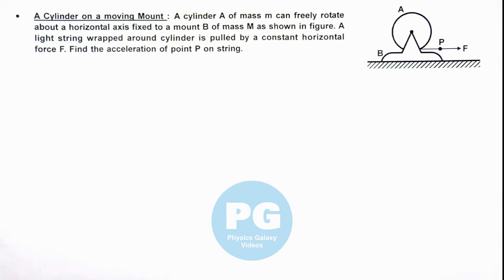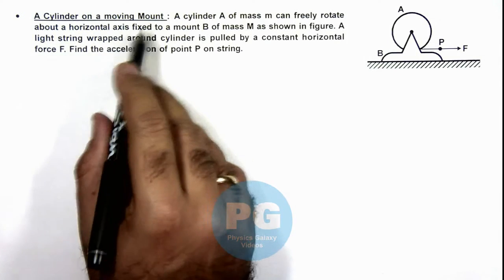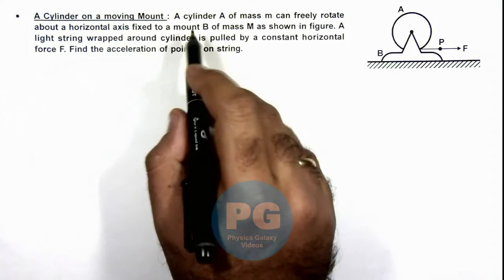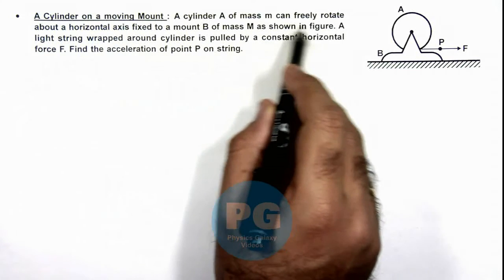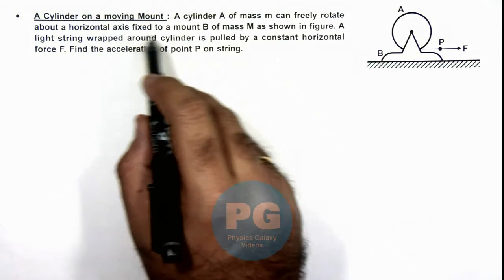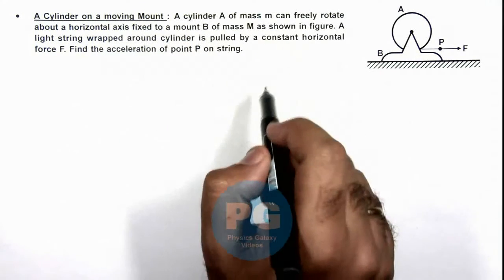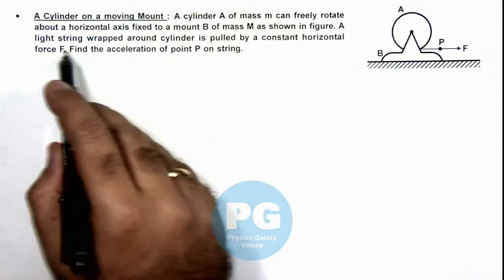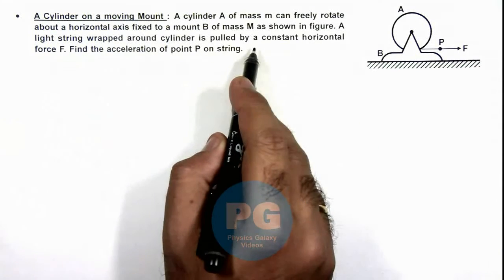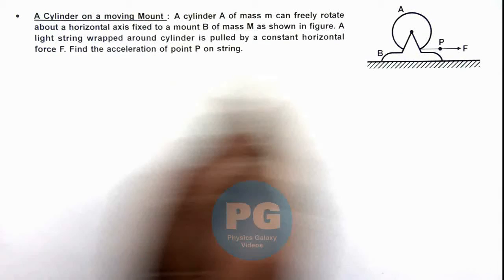In this illustration, we'll analyze a cylinder on a moving mount. Here we are given that a cylinder A of mass m can freely rotate about a horizontal axis fixed to a mount B of mass M, as shown in figure. A light string wrapped around cylinder is pulled by a constant horizontal force F.